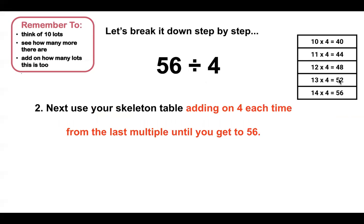I would then use my skeleton table, adding on 4 each time until I get to 56. So I started with my 10 lots of 4, which is 40, adding on 4 each time until I get to 56: 40, 44, 48, 52, 56.